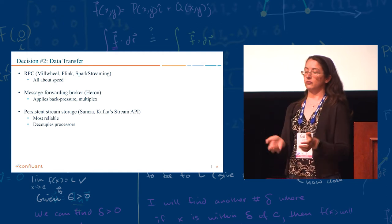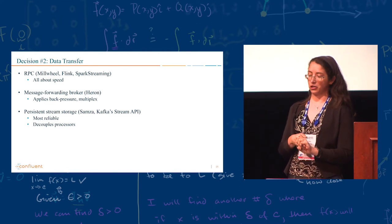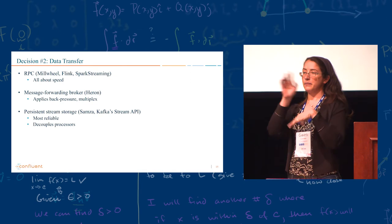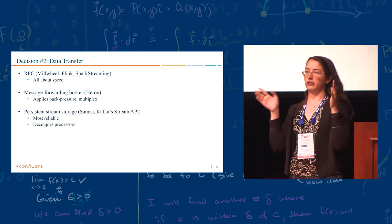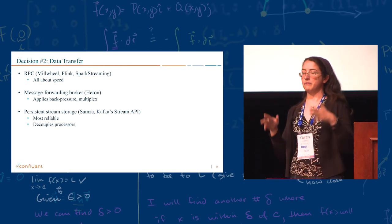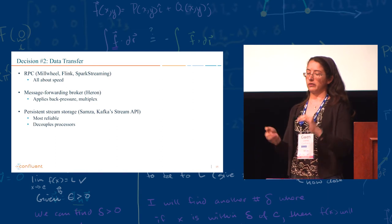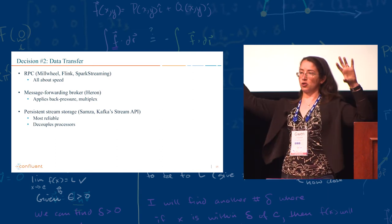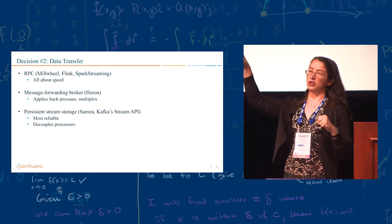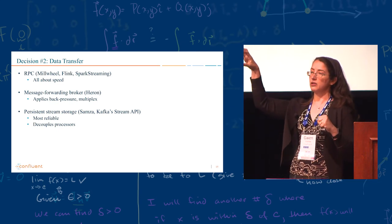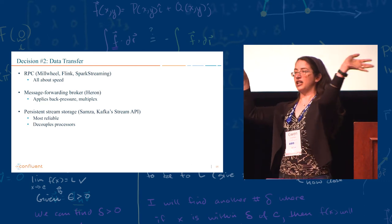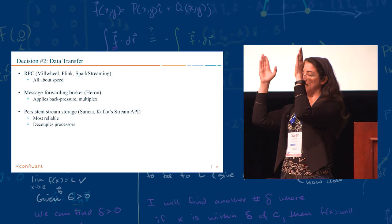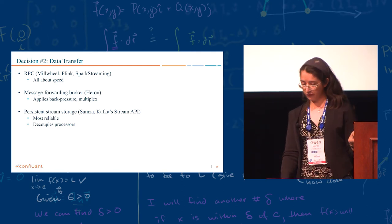They went, and we went, with persistent stream storage, which is basically you have a message bus, but instead of making it transient, you actually store for a prolonged period of time every single message that goes through. It's very reliable, and it also decouples producers from consumers. So if one of the processors, for example, the ranker just went down, and no one else in the chain has to know about it. Messages will basically accumulate for however long you want in this in-between buffer, which is really nice.